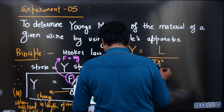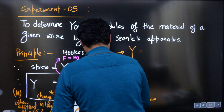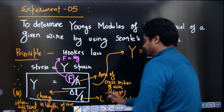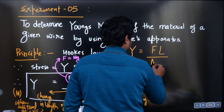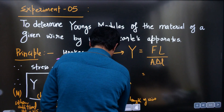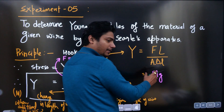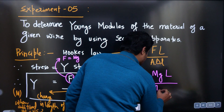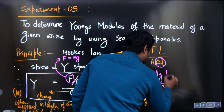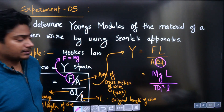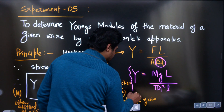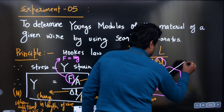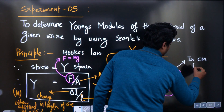Rewriting the formula: Y equals F into L divided by A times delta L, which becomes Mg times L upon pi R squared times delta L. Here M is the extra weight applied due to which the length of wire has changed, L is the original length, A is the cross-sectional area pi R squared, and delta L is the change in length. This length is measured in centimeters using a meter scale.